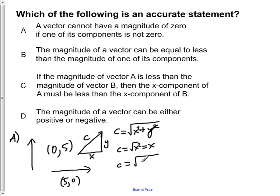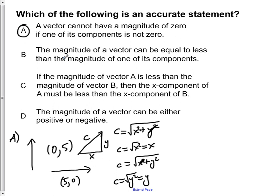And if x were zero, then c is equal to the square root of y squared, which is just y. So c equals x, or c equals y if one of the other components is zero. If both are not zero, c has some value. This shows that a vector cannot have a magnitude of zero if one of its components is not zero. So A is true — it is an accurate statement. But we'll go through the rest of the choices for help with the material.